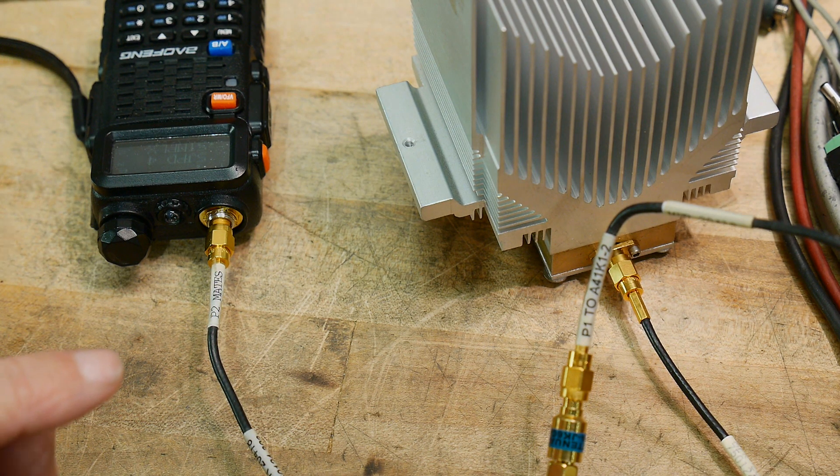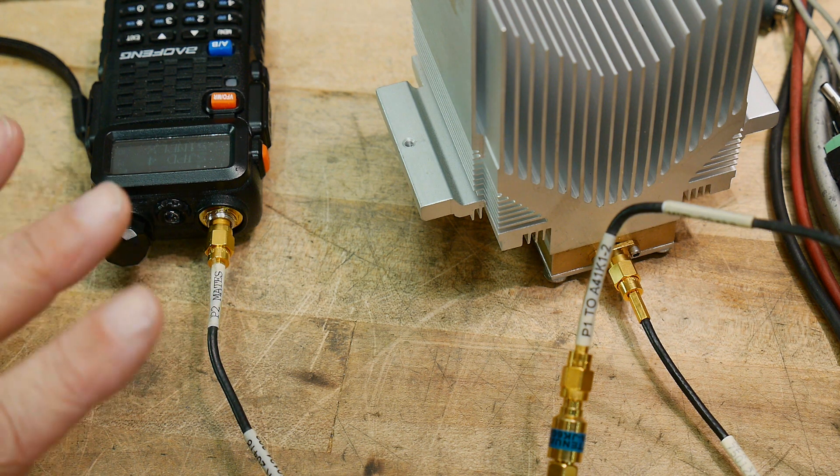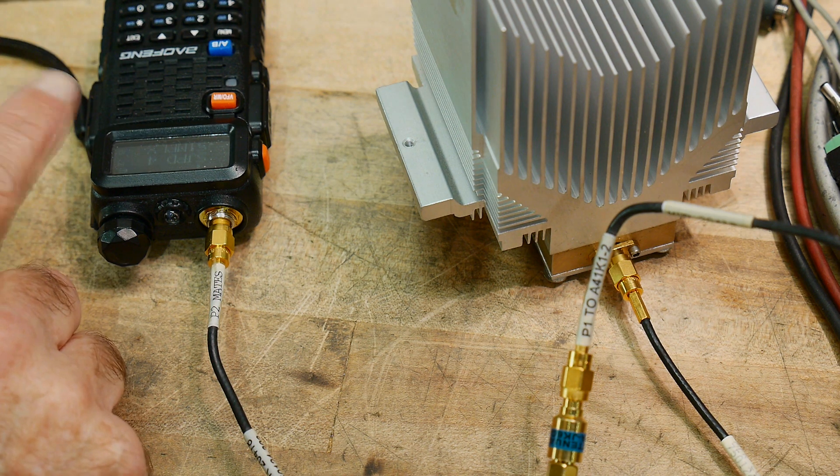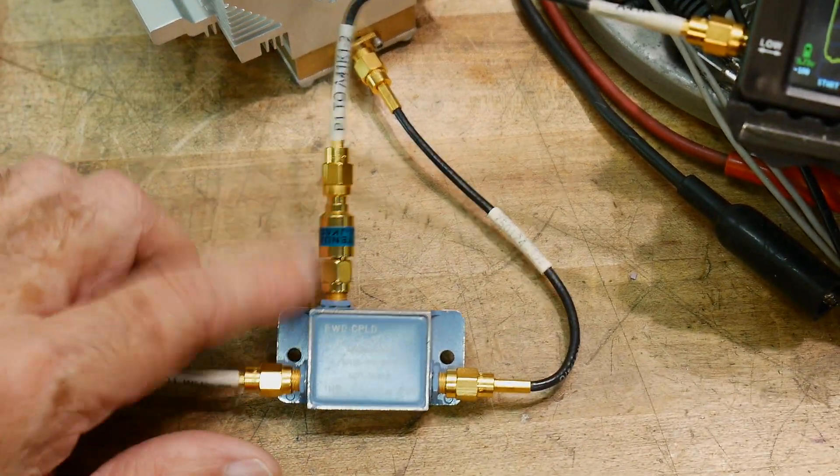So it's 4500 milliwatts, 4.5 thousand milliwatts. And in dB, that is plus 36.5. So we have plus 36.5 going into the dummy load.